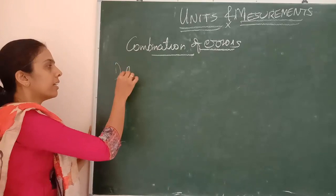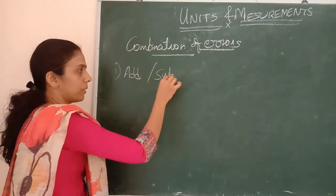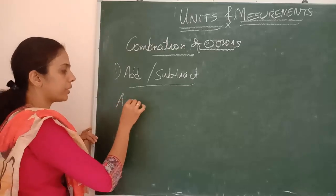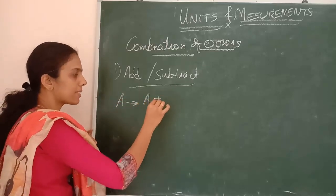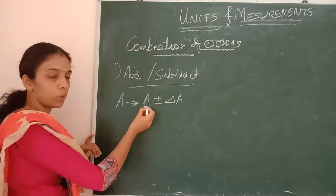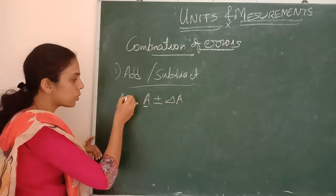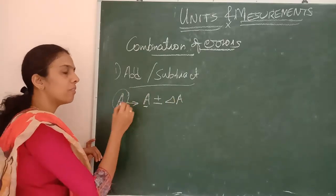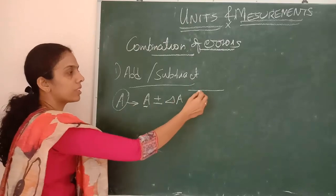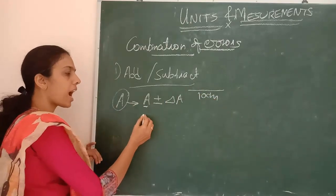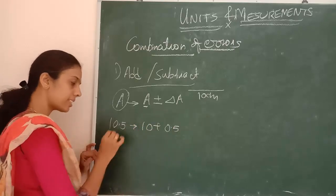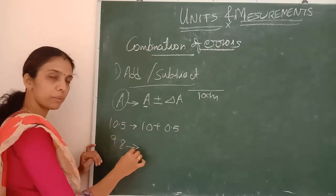If we add or subtract the values — suppose I am taking one value A, written as A plus or minus delta A. A is the real or true value, delta A is the error, and together this is the measured value. For example, while taking the length of one rod of 10 centimeters, I might get 10.5, that is 10 plus 0.5, or I could get 9.8, that is 10 minus 0.2. That is the error which is happening.